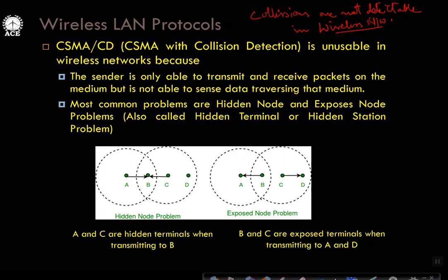Let us take up the discussion on the problems of wireless LAN protocols. As mentioned in my earlier video, we cannot use the collision detection aspect, but we can have carrier sensing. Because of carrier sensing, we may encounter two new kinds of problems called the hidden terminal problem and the exposed terminal problem. Let us understand through various slides — it is very interesting, please follow.